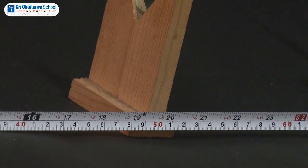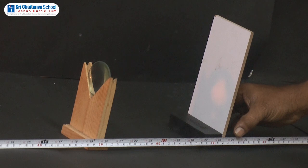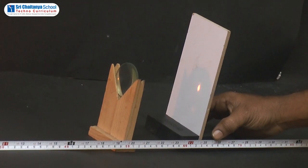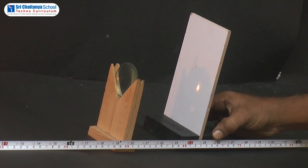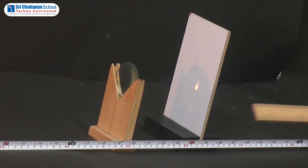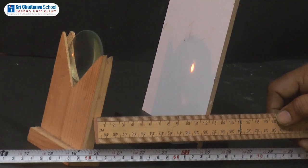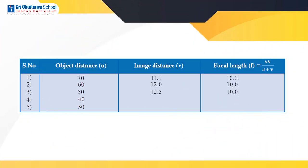Now let us place the convex lens at 50 cm mark — that means the distance between the object and the lens is 50 cm. Here the object is the candlelight. To get the image, let us adjust the screen back and forth so that we get a clear image. We got the clear image and this image is also an inverted image. The image distance, that is the distance between the convex lens and the screen, is about 12.5 cm. Tabulating the values: object distance 50 cm, image distance 12.5 cm, and by calculating, focal length is 10 cm.